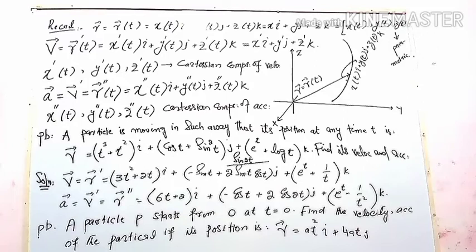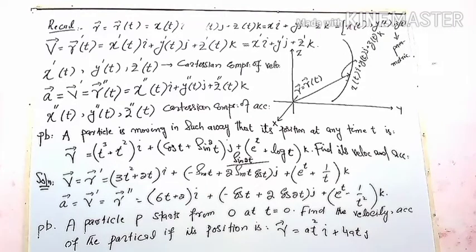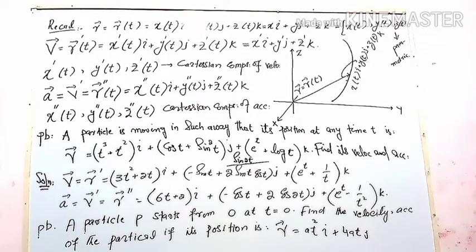The square bracket notation represents the position vector. The trajectory of the particle is described by x(t), y(t), z(t), which are the parametric equations of the particle's path.